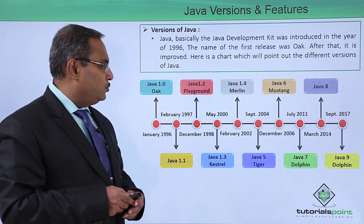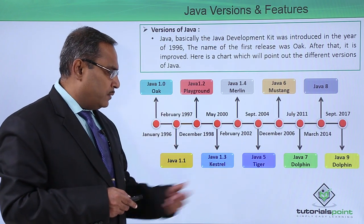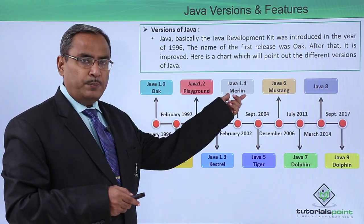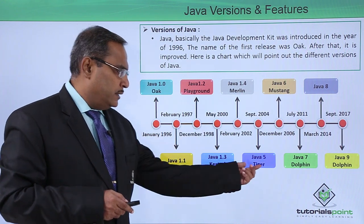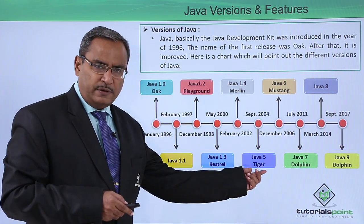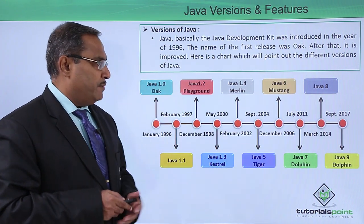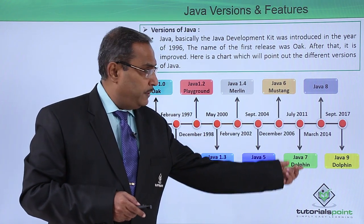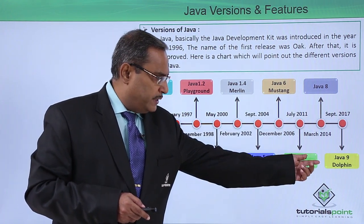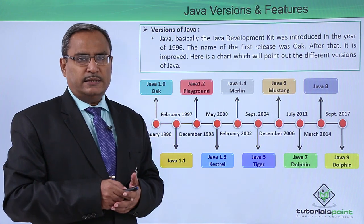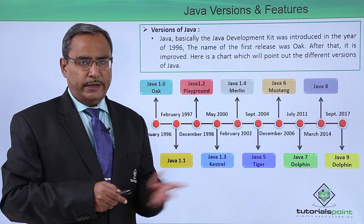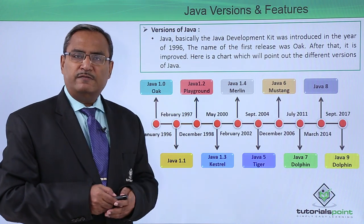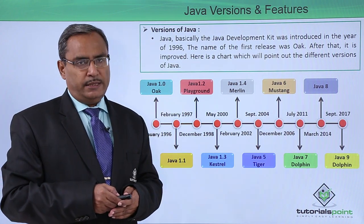So Java 1.2 is Playground, Java 1.3 is Kestrel, Java 1.4 is Merlin, Java 5 is Tiger, Java 6 is Mustang, Java 7 is Dolphin, and Java 8 and Java 9 also share the Dolphin name. Here you can find how these different Java versions came in the market.